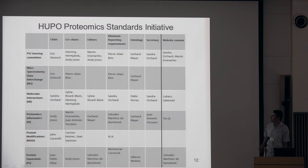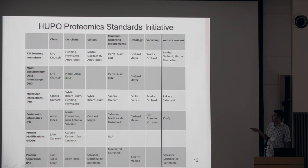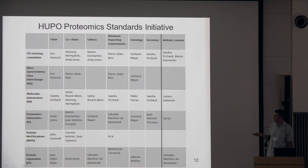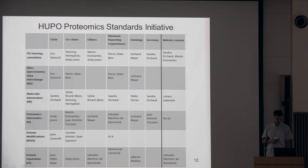The organization of the PSI includes different working groups: an overall organizational steering group, and then groups on mass spectrometry, molecular interactions, proteomics informatics, and some less active groups. These groups get together and work on different aspects of proteomics standard elements.